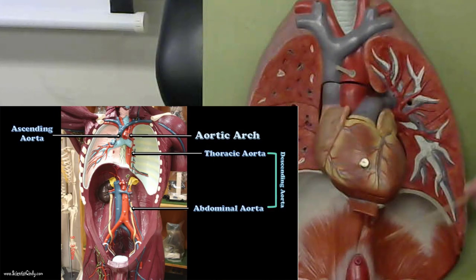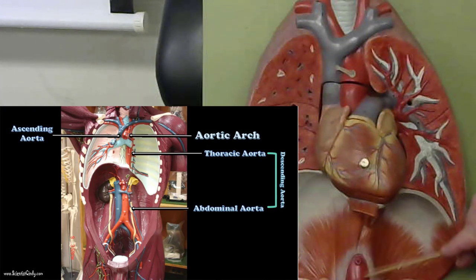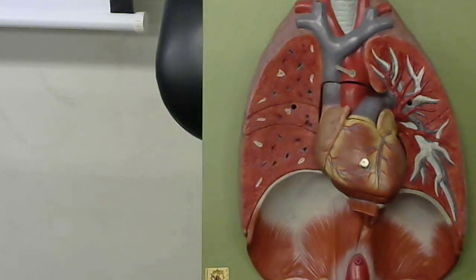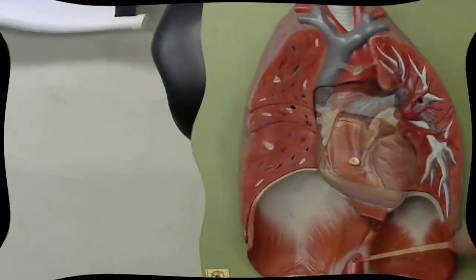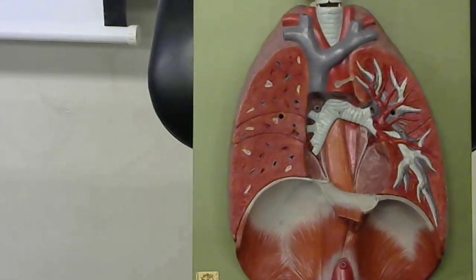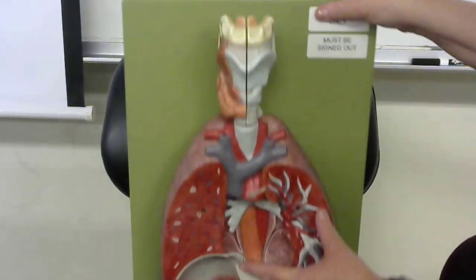Now the thoracic aorta is going to go through the diaphragm, and at that point the descending aorta will become the abdominal aorta. And we see a little bit of the abdominal aorta shown here. So remember, the abdominal aorta and the thoracic aorta are two different regions of the descending aorta.